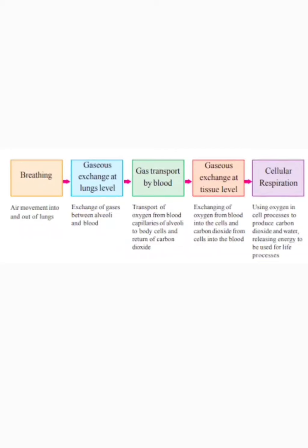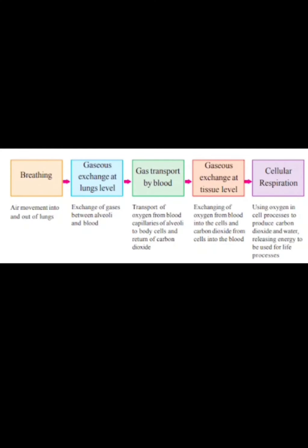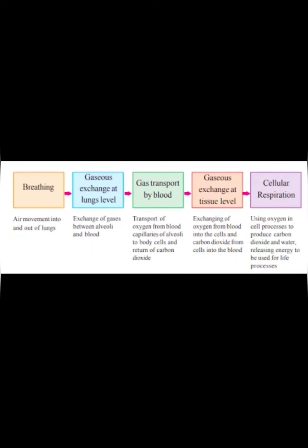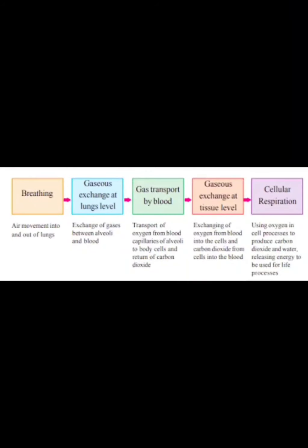The first step involved in respiration is breathing, during which air moves into and out of the lungs. The second step is gaseous exchange at lung level, where exchange of gases takes place between the alveoli and blood. The third event is gas transport by blood, where oxygen is transported from the blood capillaries of alveoli to the body cells. The fourth event is gaseous exchange at tissue level, where oxygen and carbon dioxide are exchanged between tissues and blood. The last event is cellular respiration.